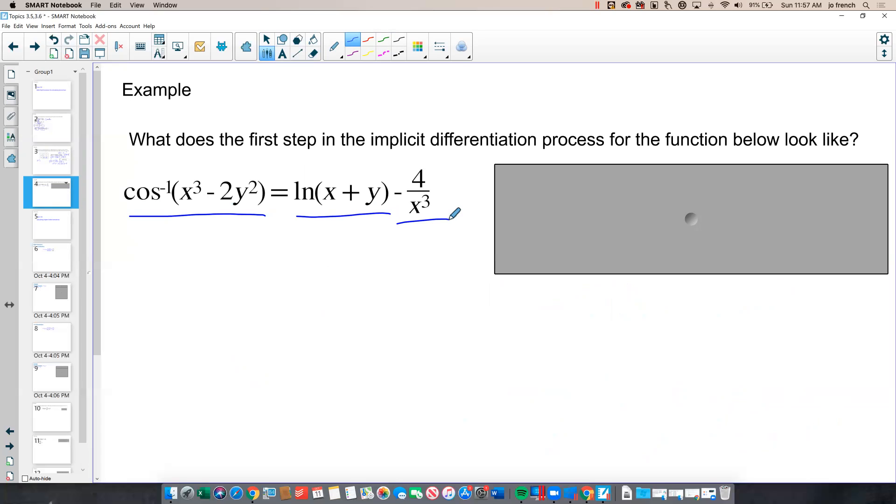If I look at the inverse cosine of x cubed minus 2y squared, I know that that's going to be a chain rule application using the inverse cosine derivative, which is going to be negative one over the square root of 1 minus x squared, but the x in this case is this whole expression, x cubed minus 2y squared, all squared. And then I have to multiply by the derivative of the inside. So, the derivative of x cubed is just 3x squared. And the derivative of 2y squared is going to be, using the power rule and the chain rule, 4y to the first times y prime.